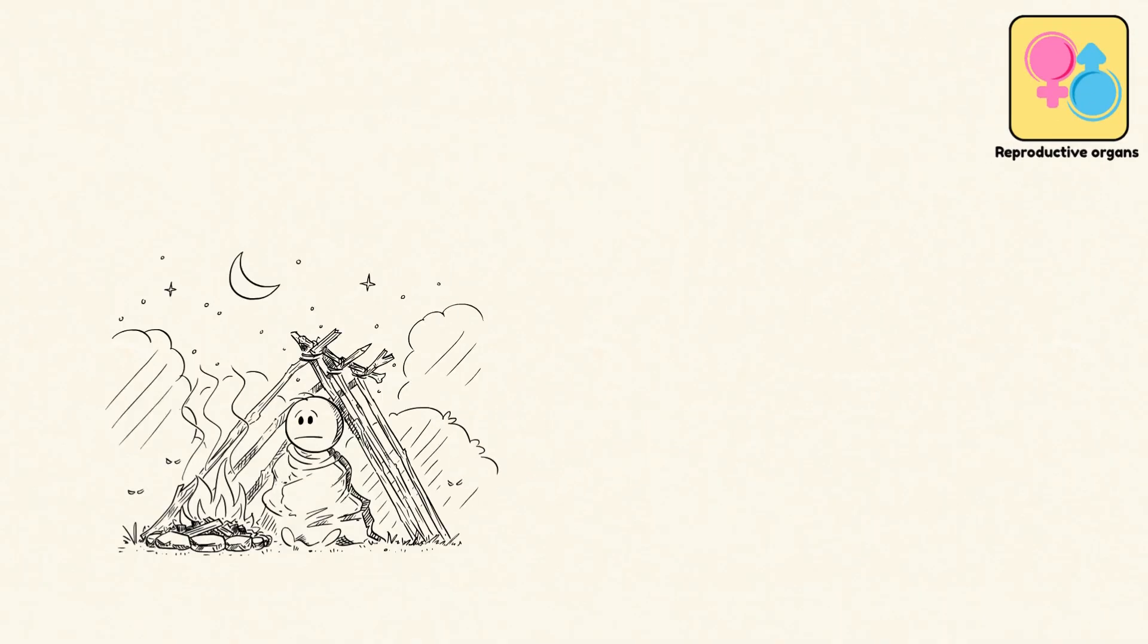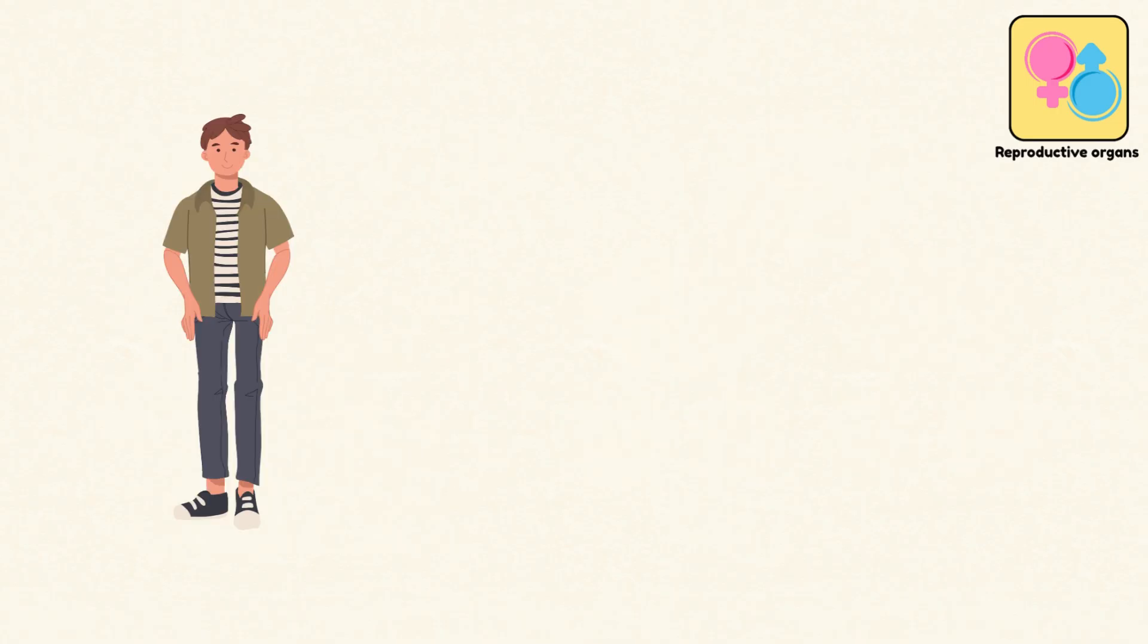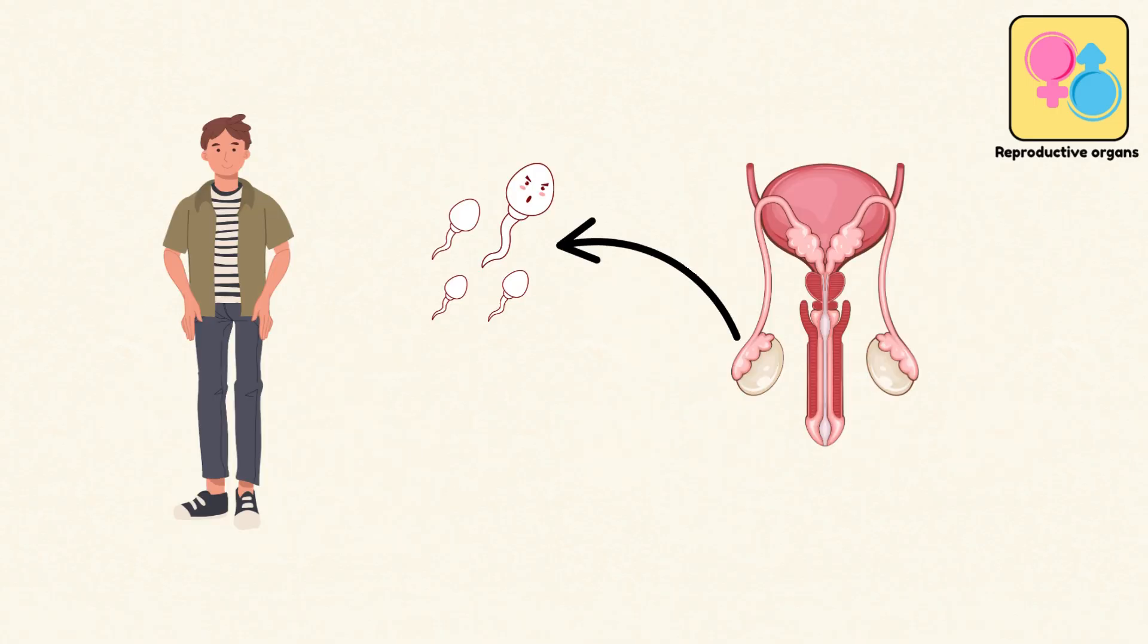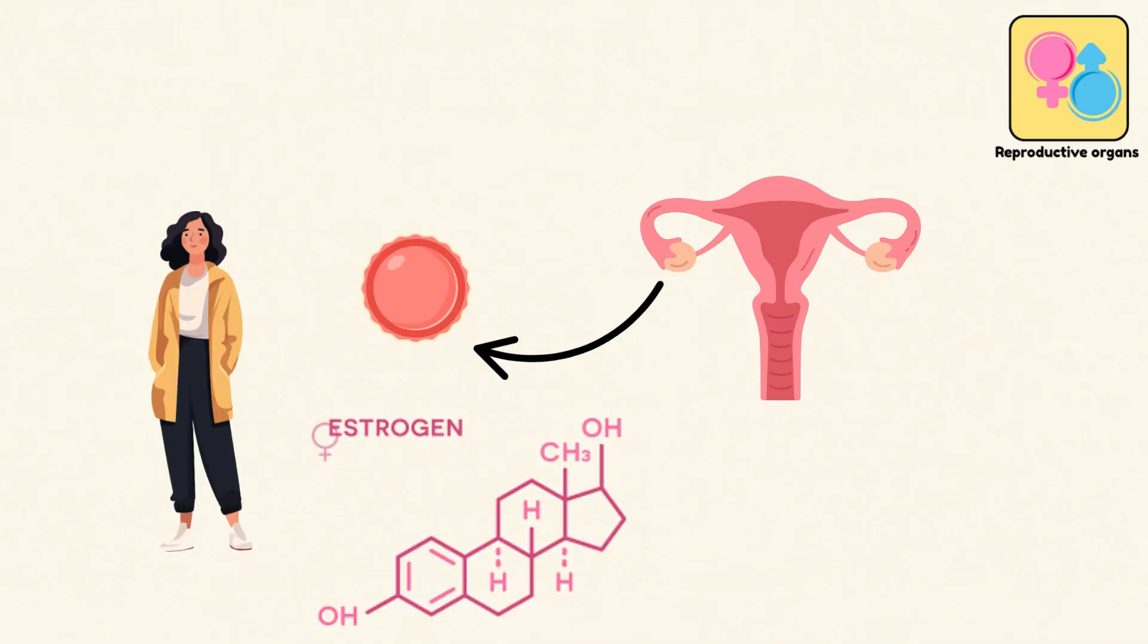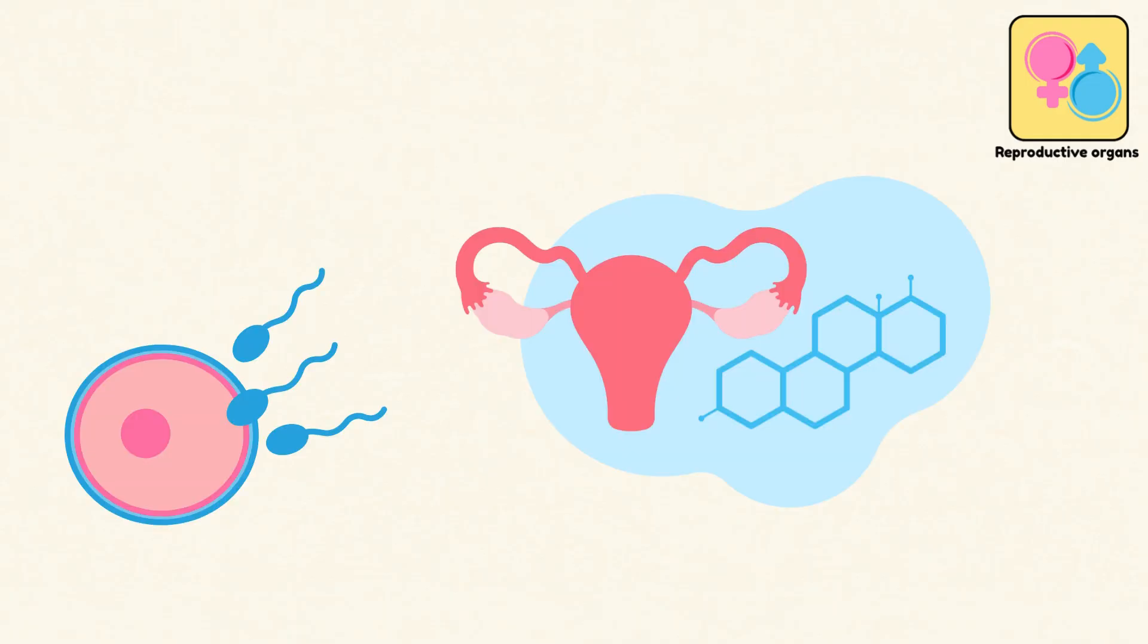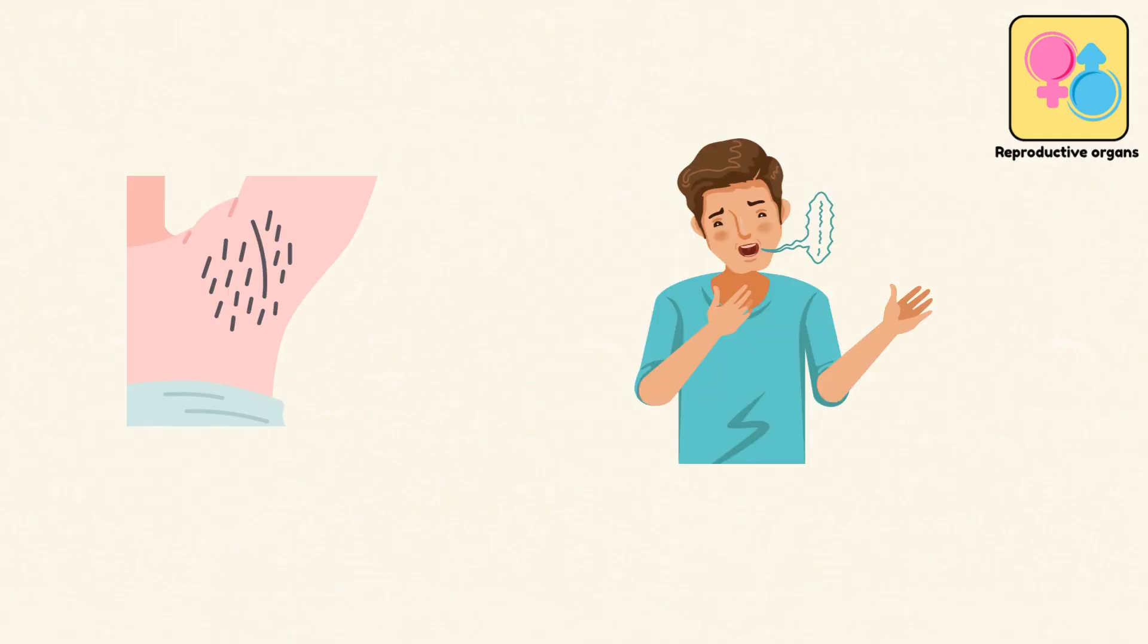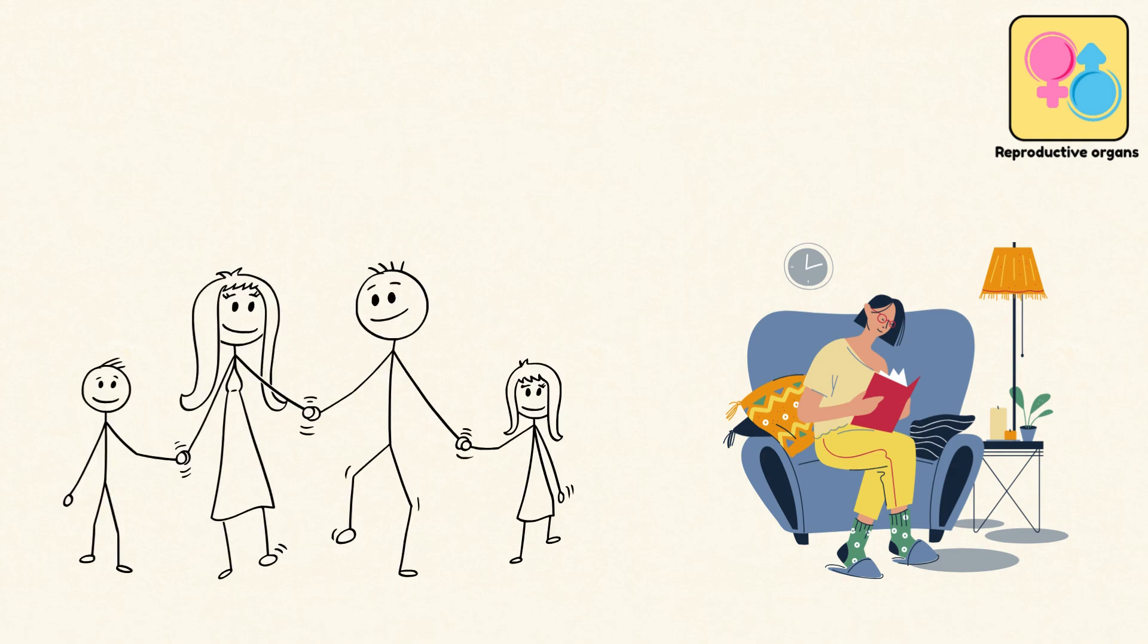Reproductive organs. The reproductive organs are less about survival and more about continuation. In males, the testes produce sperm and the hormone testosterone. In females, the ovaries release eggs and produce estrogen and progesterone. Together, these systems manage fertility, hormonal balance, and traits like body hair and voice pitch. While not needed to live day to day, they ensure the human story doesn't end with us.